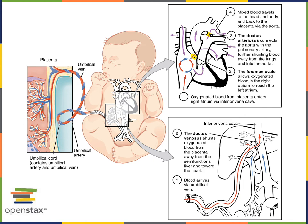The inferior vena cava then drains this oxygen-rich blood into the right atrium, where it mixes with deoxygenated blood that's draining through the superior vena cava. The blood now has an intermediate oxygen concentration in the right atrium.